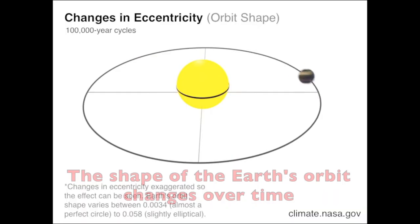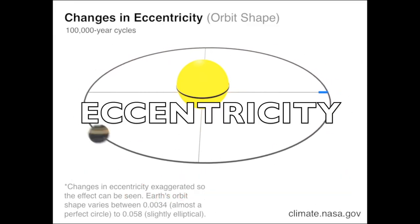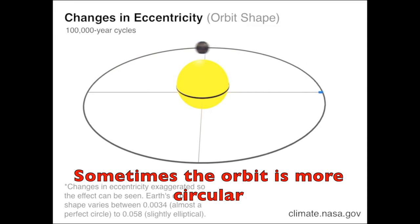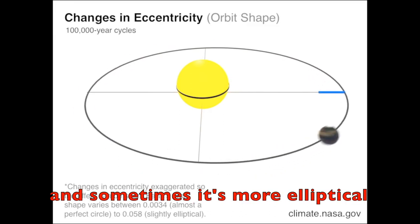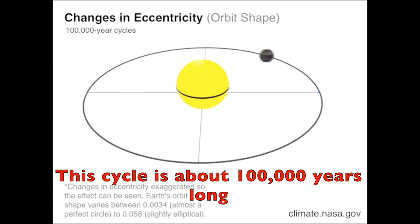First, the shape of the Earth's orbit changes over time, and we call this eccentricity. Sometimes the orbit is more circular, and sometimes it's more elliptical. This cycle is about 100,000 years long.